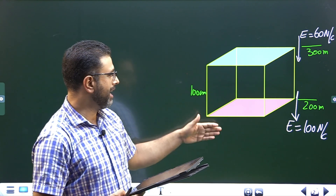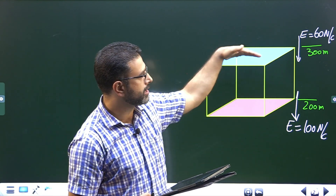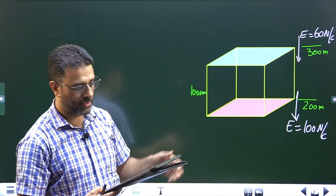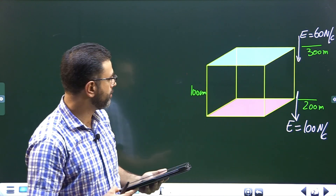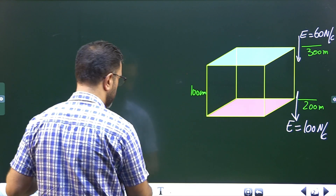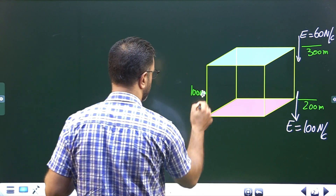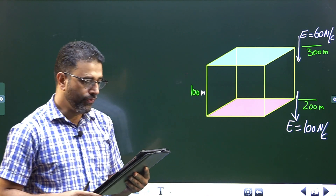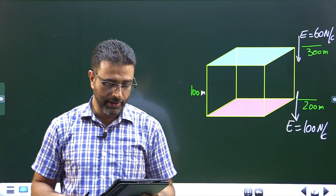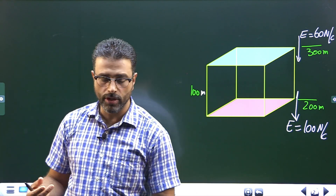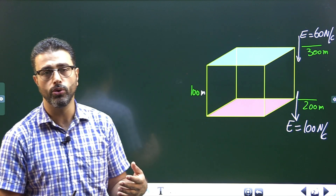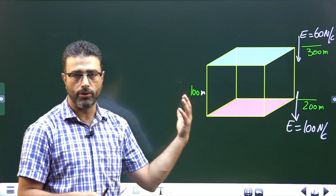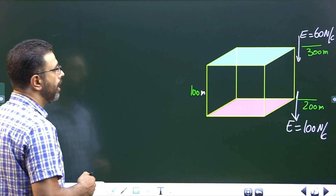This cube we have imagined has its lower face at 200 meters and upper face at 300 meters. The edge length is 100 meters. We have to find out the charge enclosed by the cube. We'll first find out the net flux through the cube, and then we'll find out the charge enclosed.